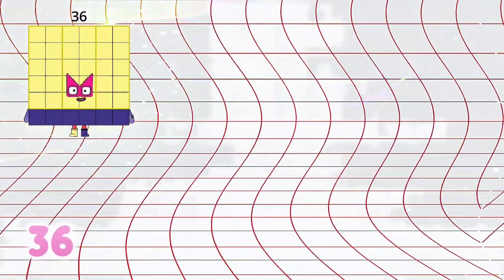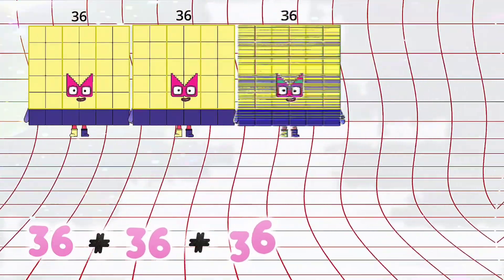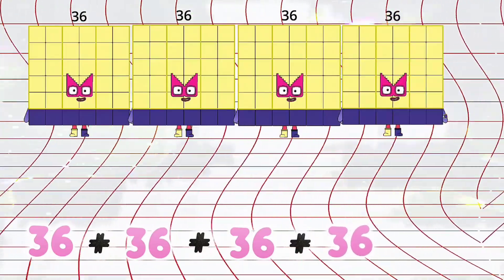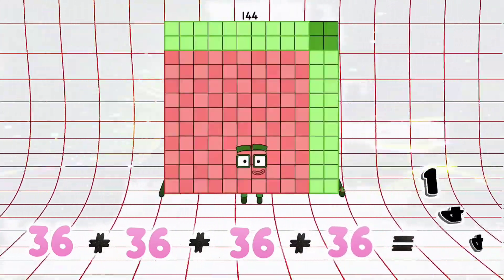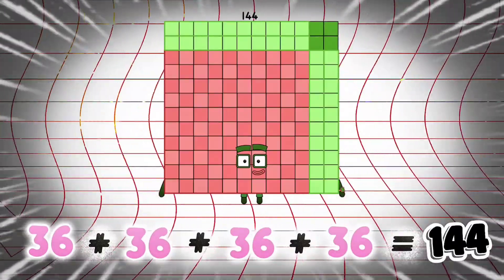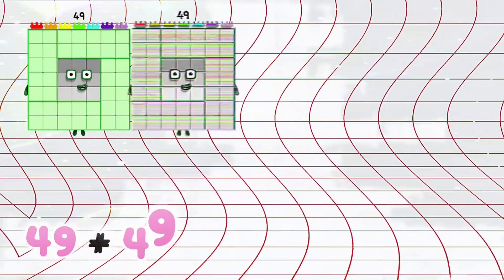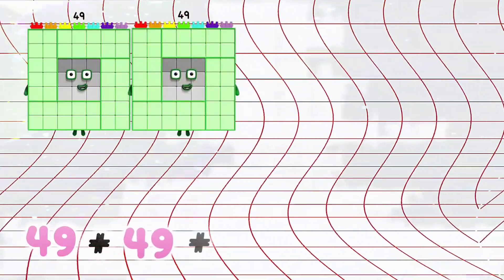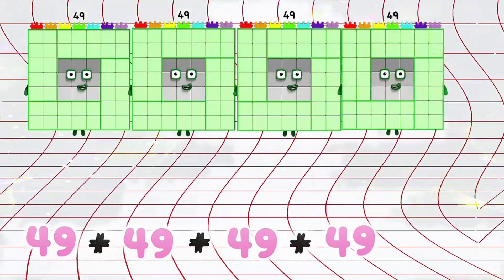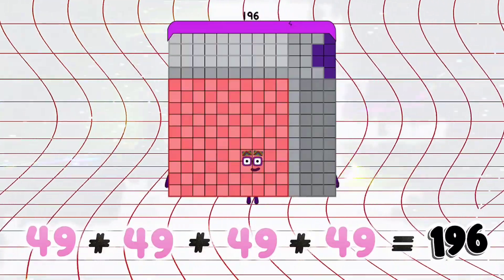36 plus 36 plus 36 plus 36 is equals to 144. 49 plus 49 plus 49 plus 49 is equals to 196.